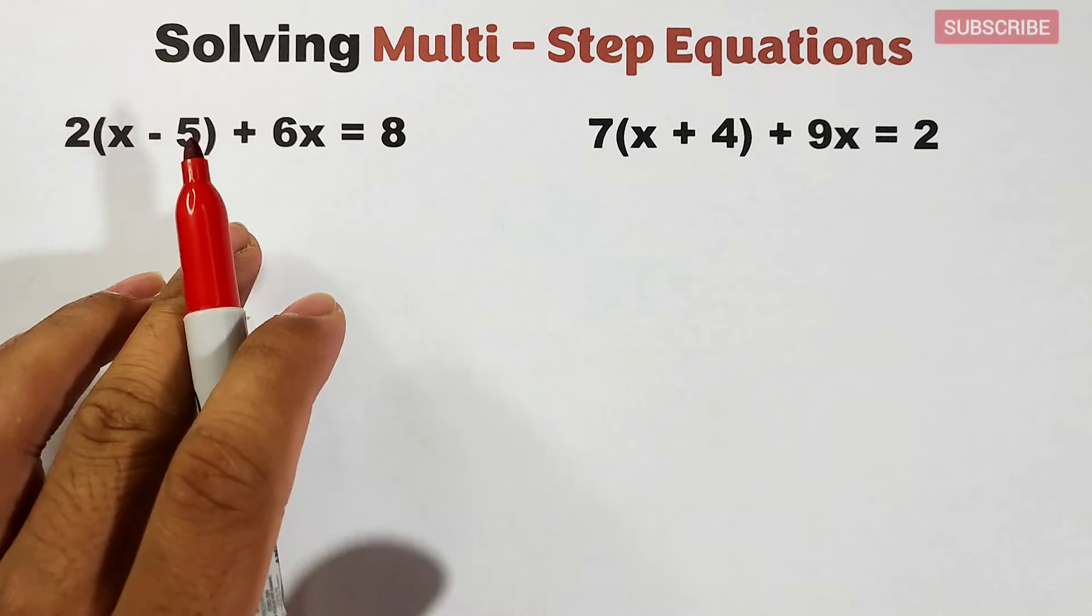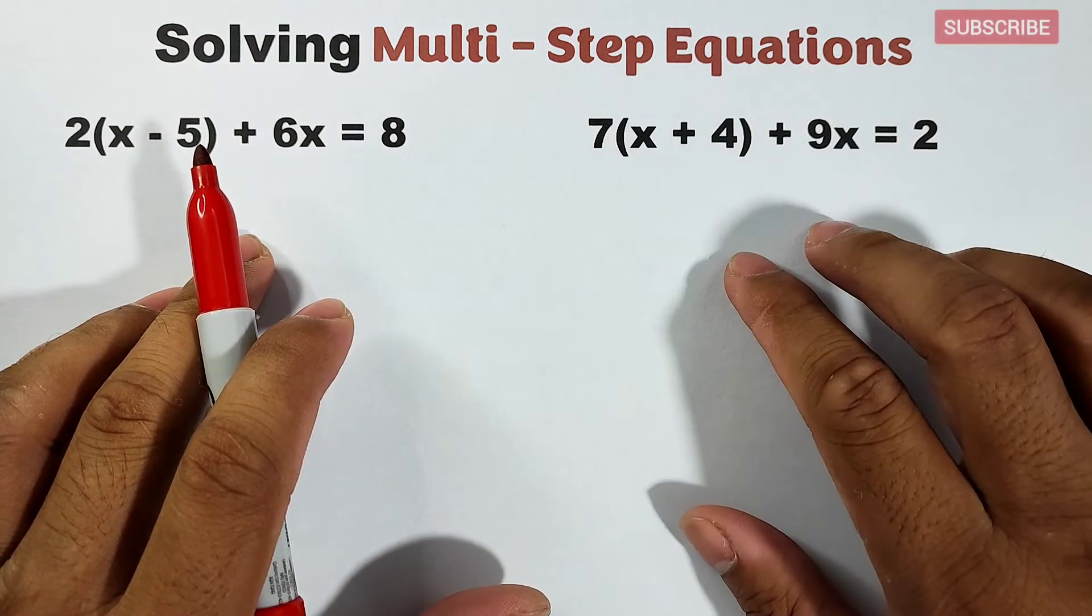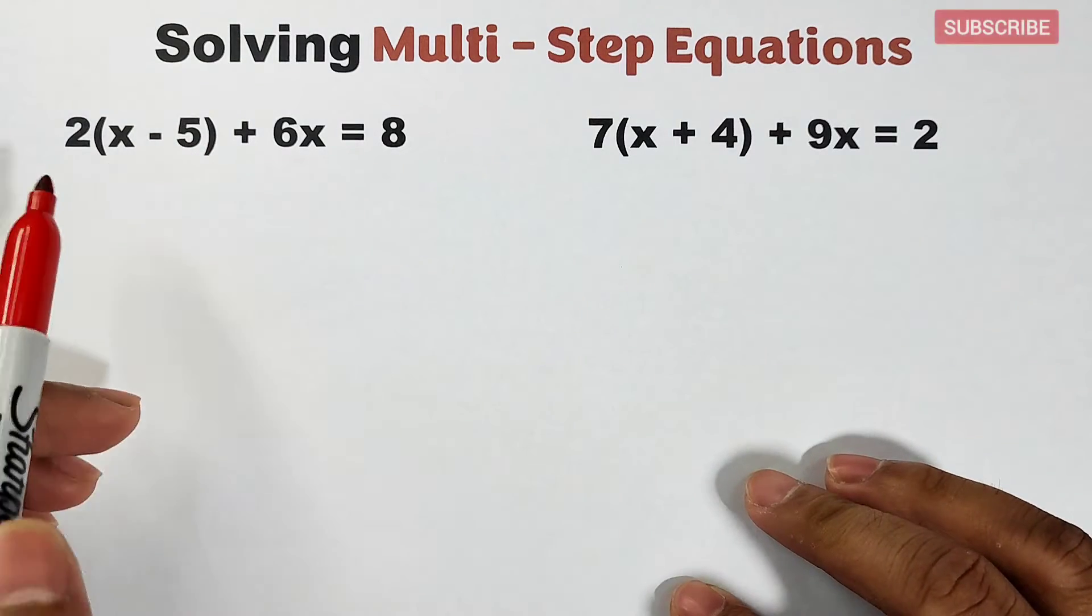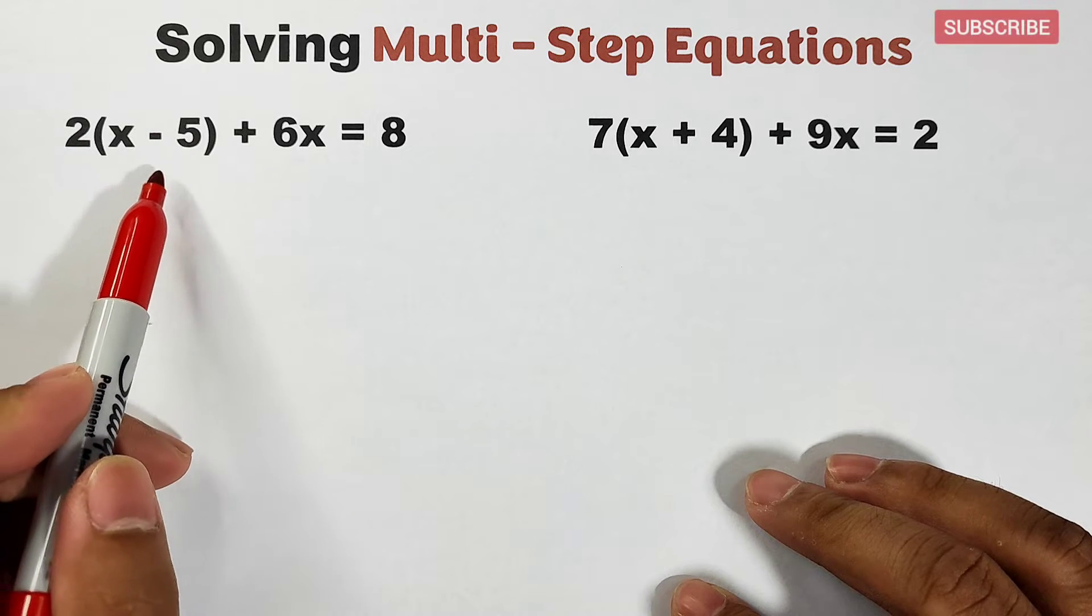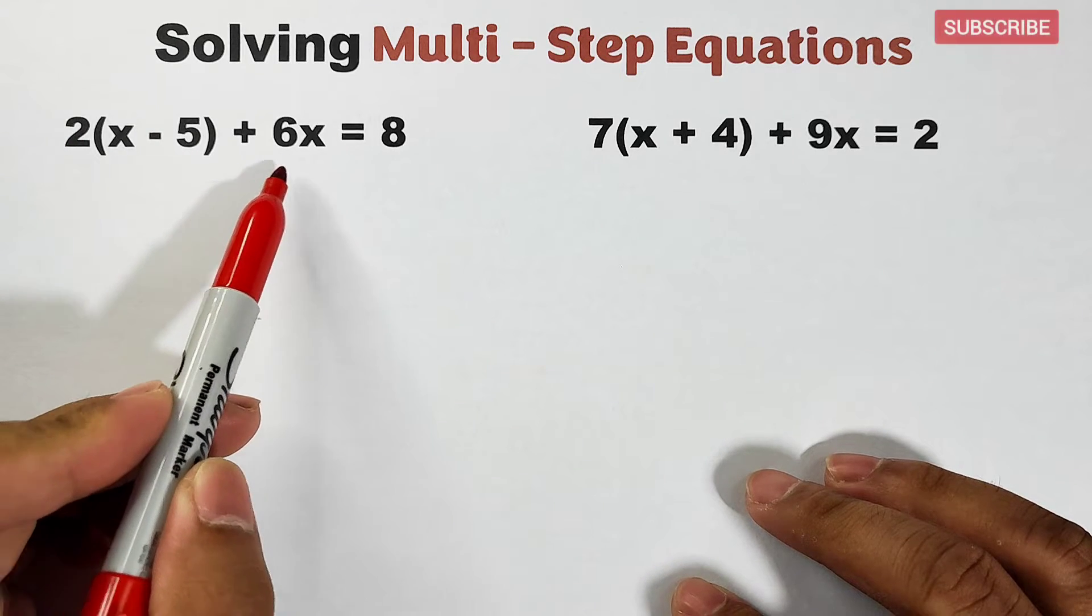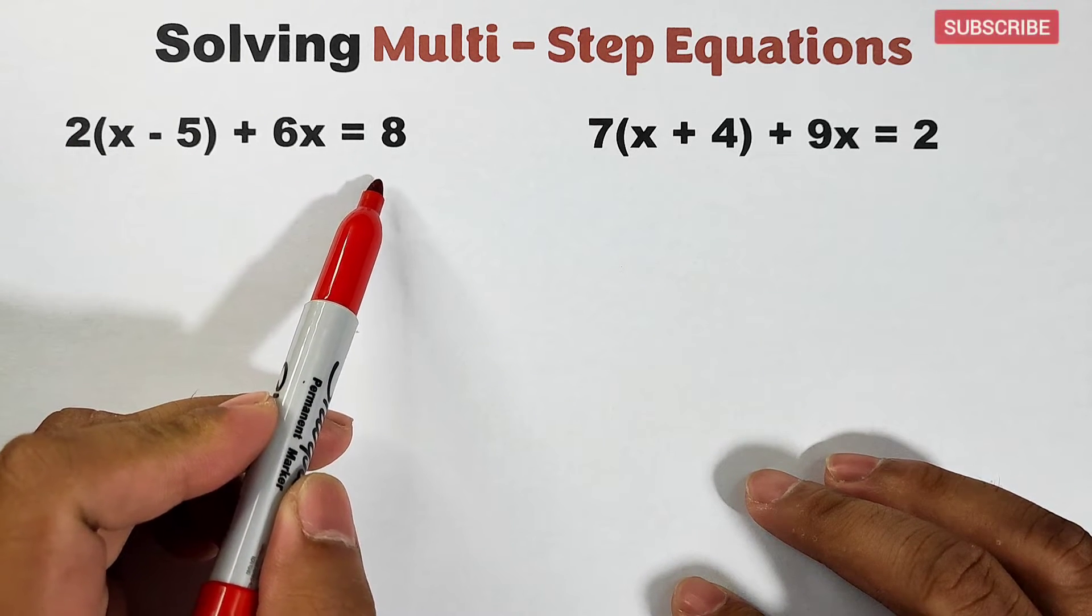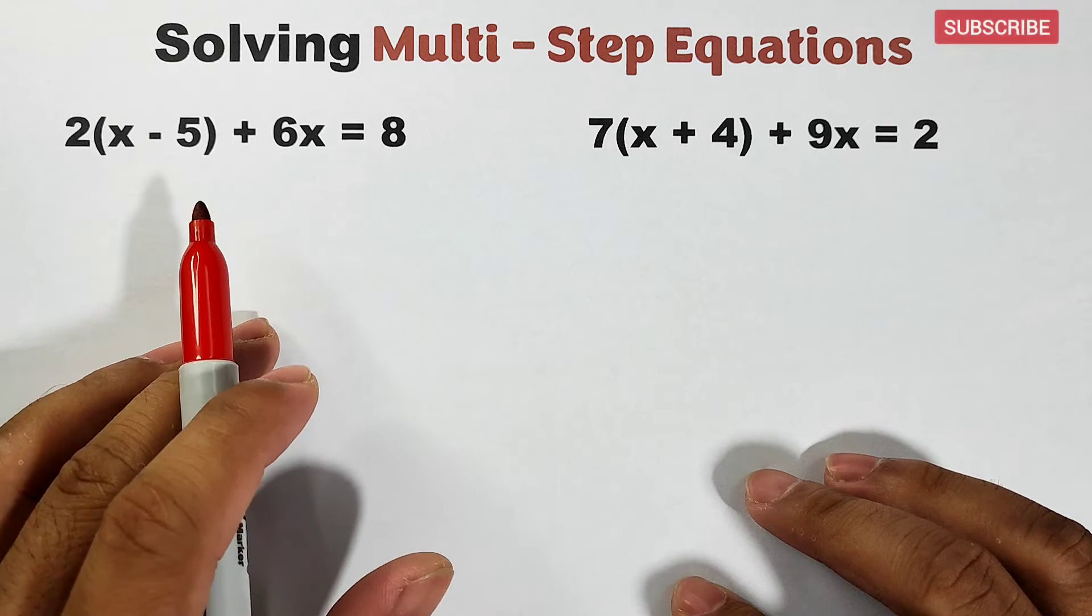This is number 1 and this is number 2. What we have here in number 1 is 2(x - 5) + 6x = 8. So the question here: how are we going to solve this kind of equation?